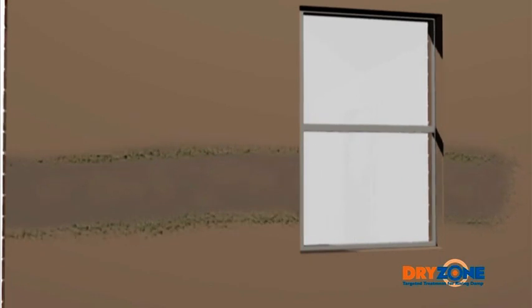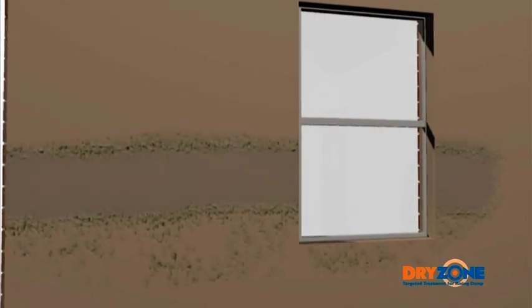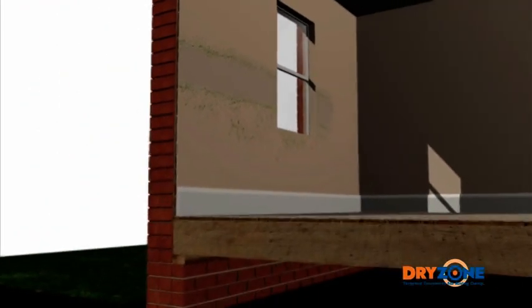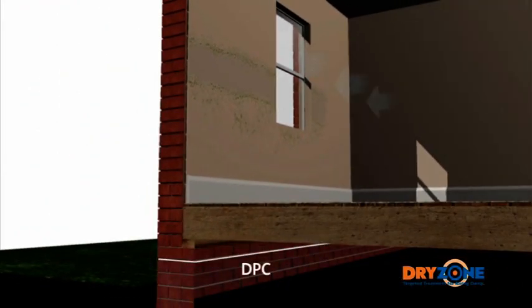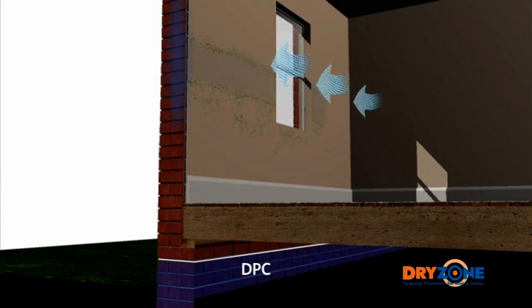As the moisture evaporates internally, soluble salts are left behind and over time these crystallise to form a visible salt band towards the maximum height the moisture rises. Even if a damp-proof course is then installed, this salt concentration will continue to absorb moisture from the surrounding environment and cause the wall to remain damp.